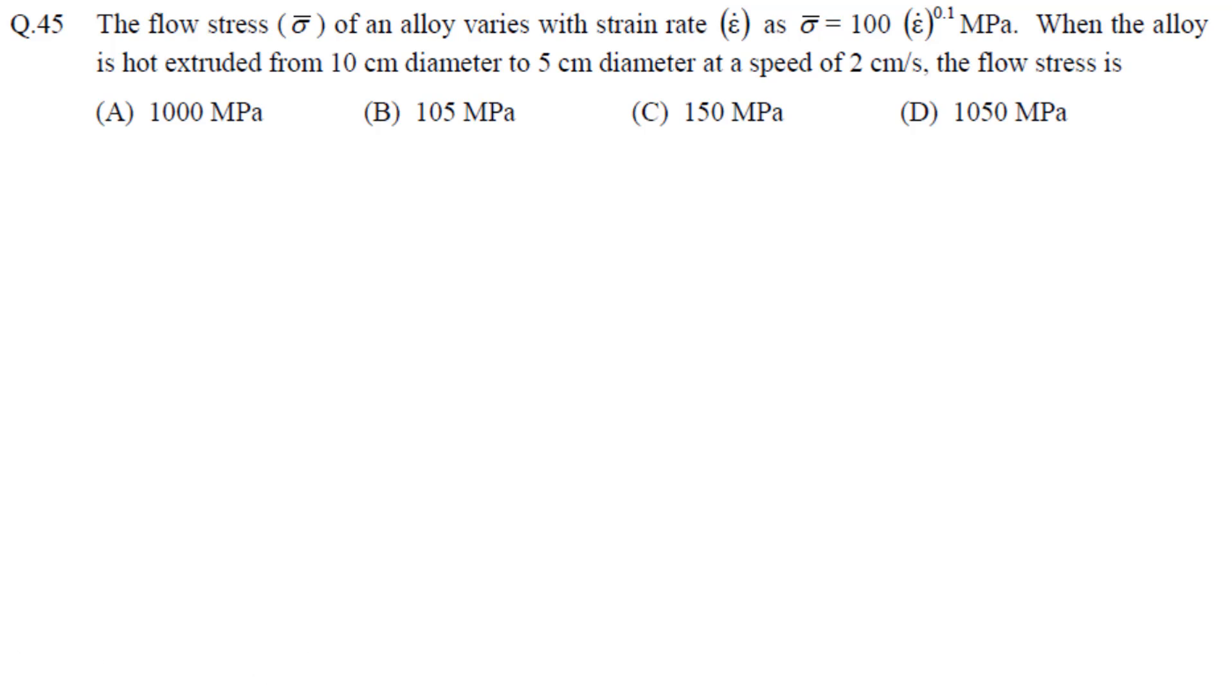The flow stress of an alloy varies with strain rate as sigma bar equals 100 times strain rate to the power 0.1 MPa. When the alloy is hot extruded from 10 centimeter to 5 centimeter diameter at speed of 2 centimeters per second, the flow stress is? This is an extrusion question. We need to find the strain rate first.